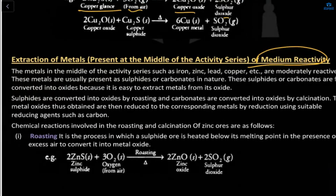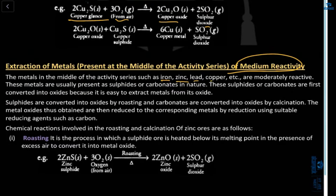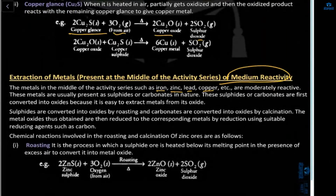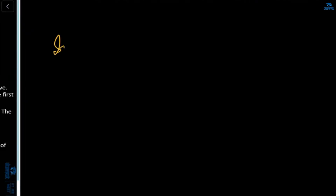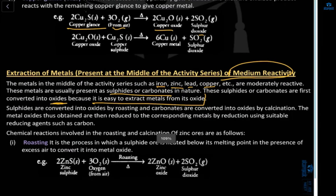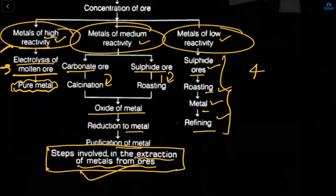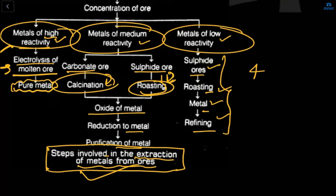For medium-reactivity metals — iron, zinc, lead, copper — these are the metals in the middle of the reactivity series. They are usually present as sulfides or carbonates in nature. These sulfides or carbonates are first converted into oxides because it is easier to extract metals from oxide form. Sulfide ores are converted to oxide by roasting; carbonate ores are converted to oxide by calcination.